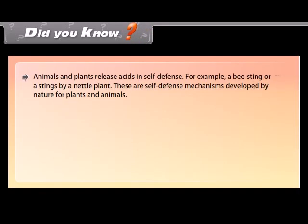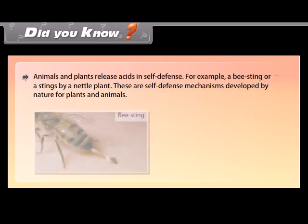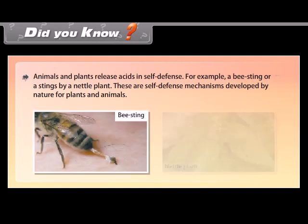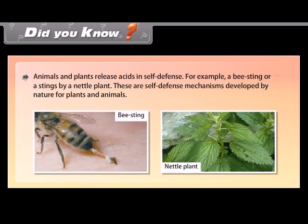Did you know? Animals and plants release acids in self-defense, for example, a bee sting or stings by a nettle plant. These are self-defense mechanisms developed by nature for plants and animals.